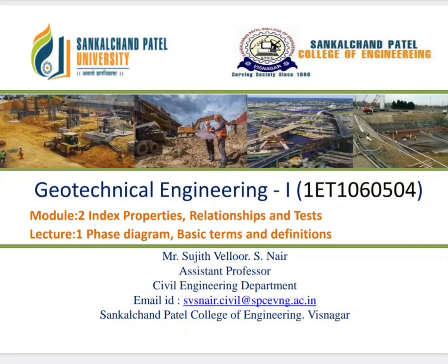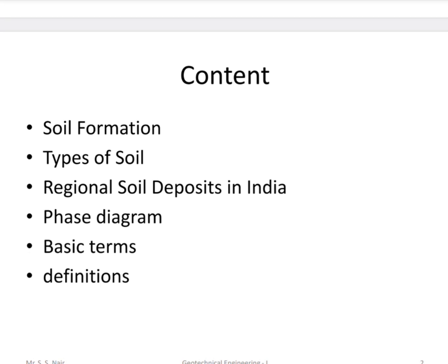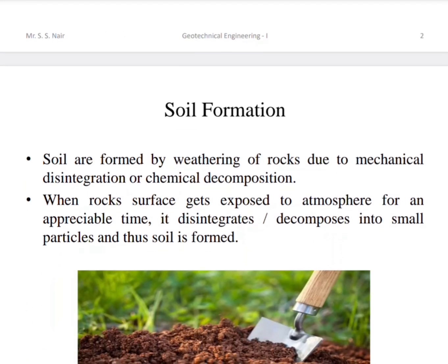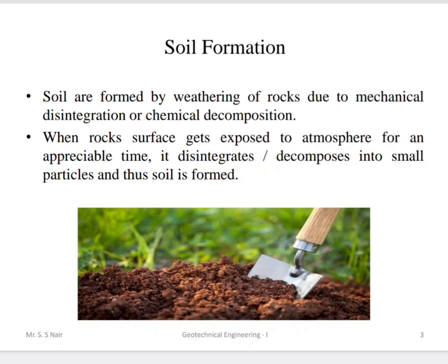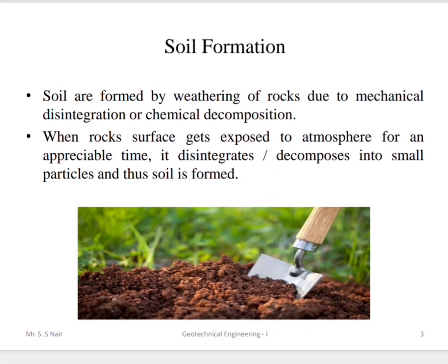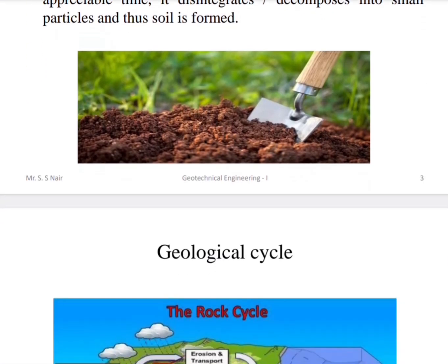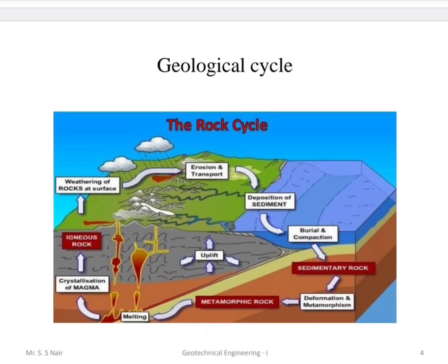Welcome to Geotechnical Engineering Part 1: Index Properties, Relationships and Tests. Here we will be discussing soil formation, types of soil, original soil deposits in India, phase diagram, and basic terms and definitions. Soil is generally the upper layer of the earth's crust, which is formed by weathering of rocks due to mechanical disintegration or chemical decomposition. The rock surface gets exposed to the atmosphere for an appreciable time, disintegrates and decomposes into small particles, and soil is formed.